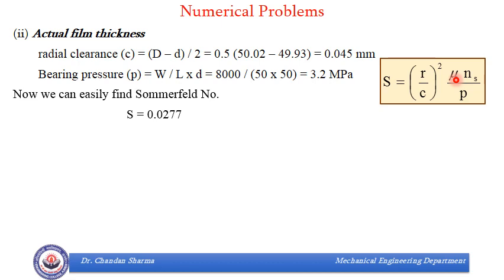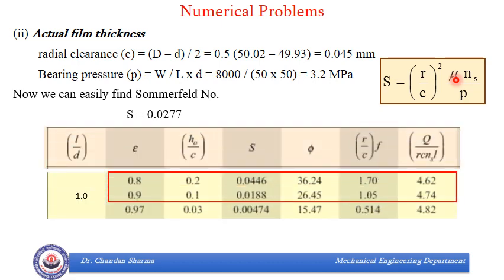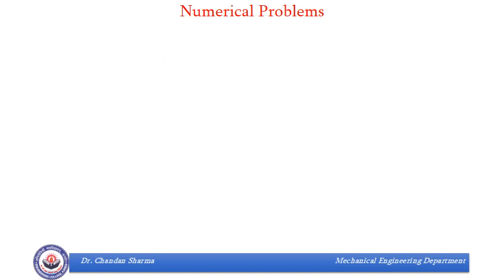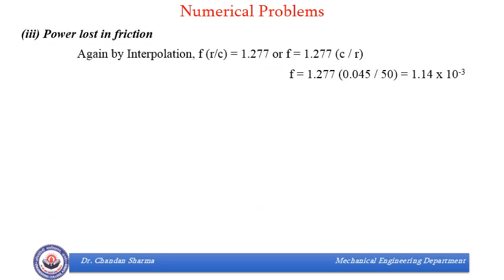Sommerfeld number came out to be 0.0277. Again, we went to that Raimondi and Boyd table. Again, exact value of S is not available. So, we will take value in between these two. And by interpolation, we will find H0 by C and R by C F. H0 by C came out to be 0.1349 or H0 is 0.00607 mm or it is 6.07 microns. So, permissible was 6 and actual is 6.07 microns. Then, from the same Raimondi and Boyd table, we found what is Fr by C by interpolation. Then, F comes out to be 1.14 into 10 to the power minus 3.